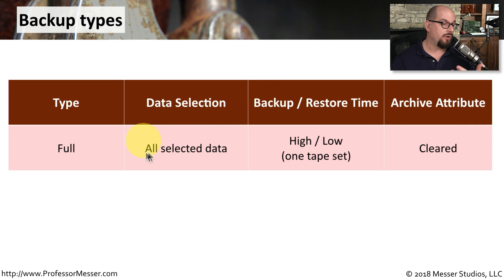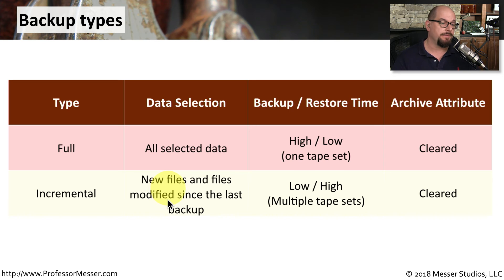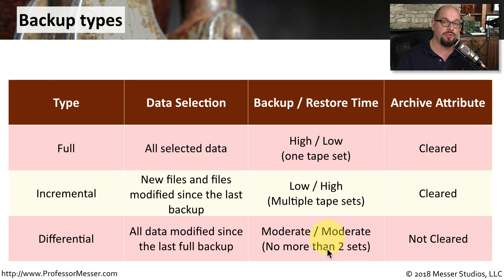With a full backup, you gather all of the data stored on the system. It does take a long time to backup, but a relatively short time to restore since you only need the one tape set to restore an entire full backup. Once you perform a full backup, the archive attribute is cleared. For an incremental backup, we're backing up only new files and files modified since the last backup — very quick backup time, but you'll need multiple tape sets to restore. After an incremental backup, all archive bits are cleared. The differential backup backs up all data modified since the last full backup. It's a moderate backup time and a moderate restore time, because you only need the last full backup and the last differential backup. The archive attribute on a differential backup does not get cleared, so we're able to create an additional differential backup every day.